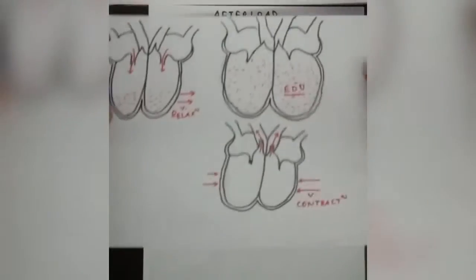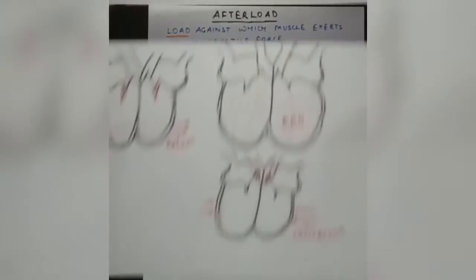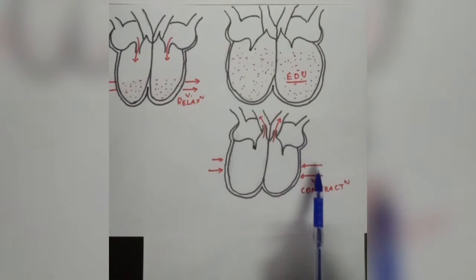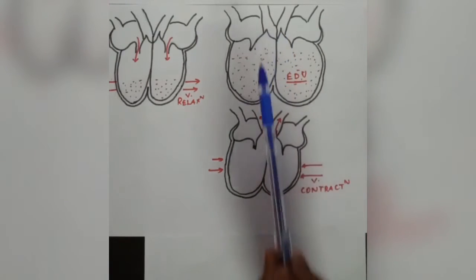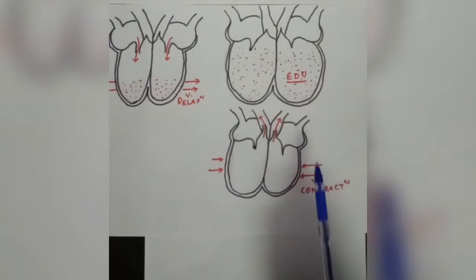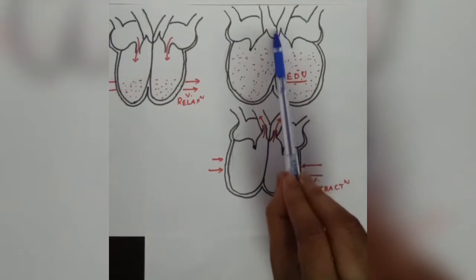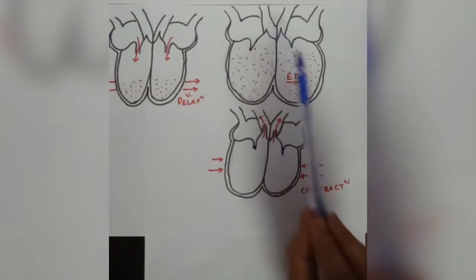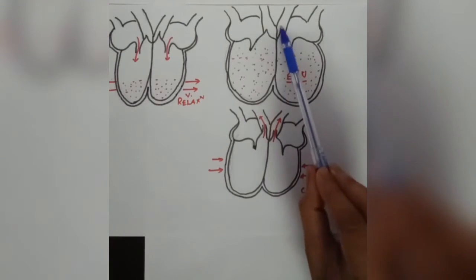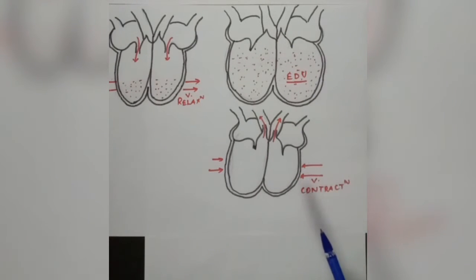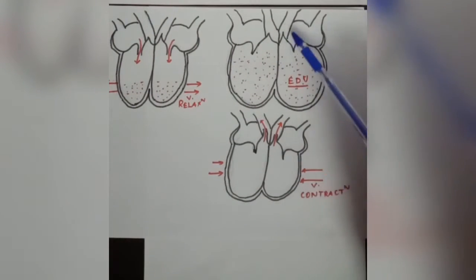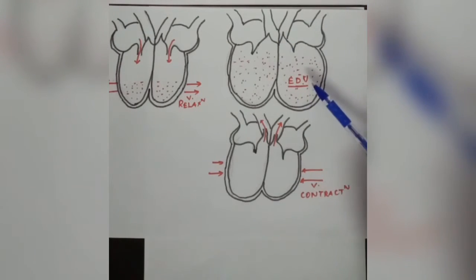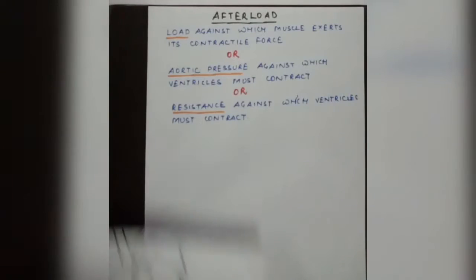Aortic pressure provides resistance to the ventricles contracting and ejecting blood. So afterload is the aortic pressure against which the ventricles must contract. It is basically a resistance applied to ventricular contraction and ejection of blood. This is the afterload definition.